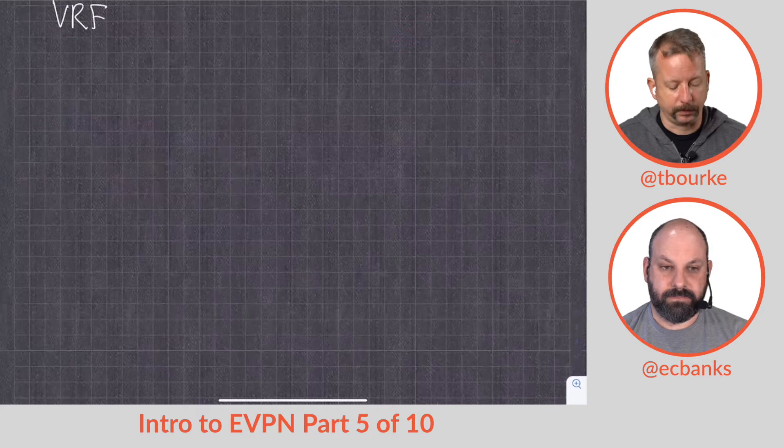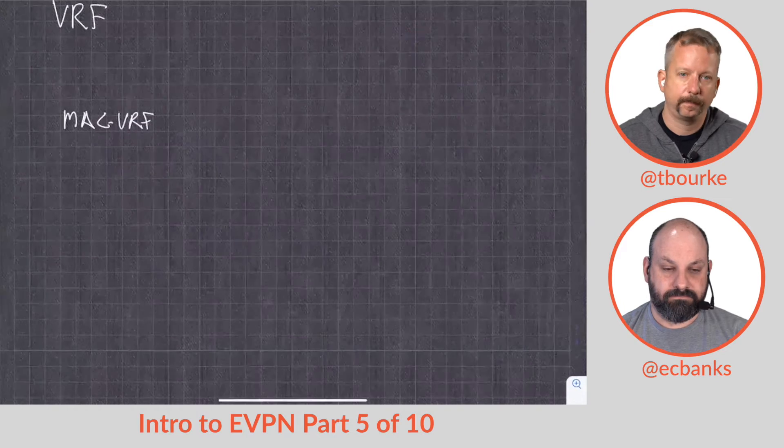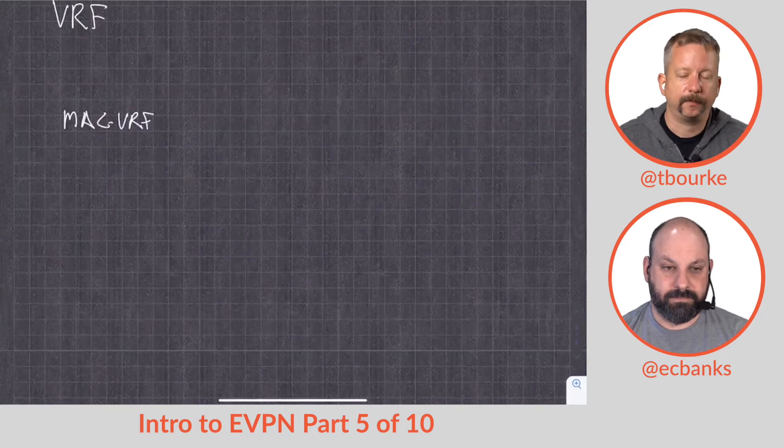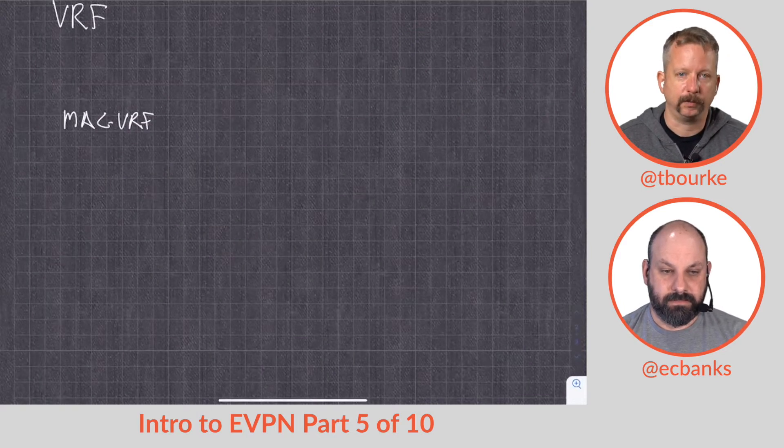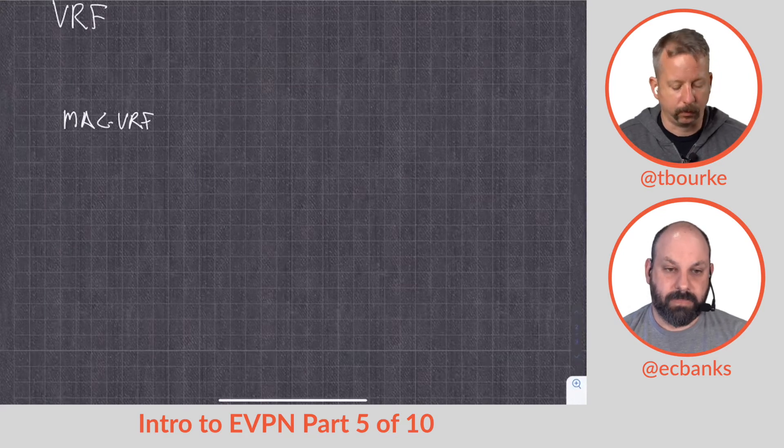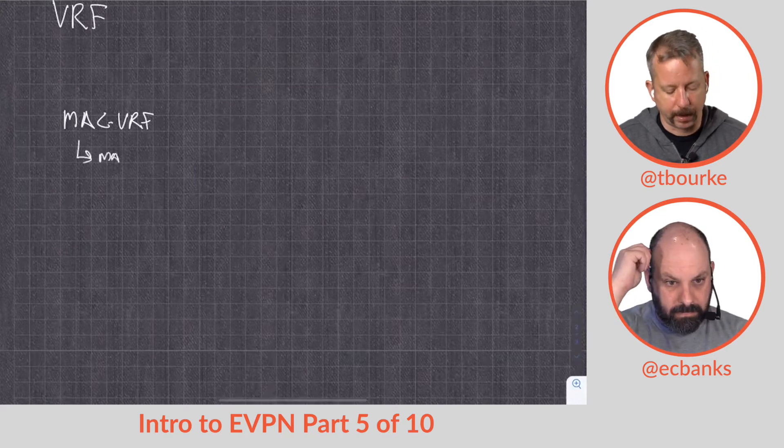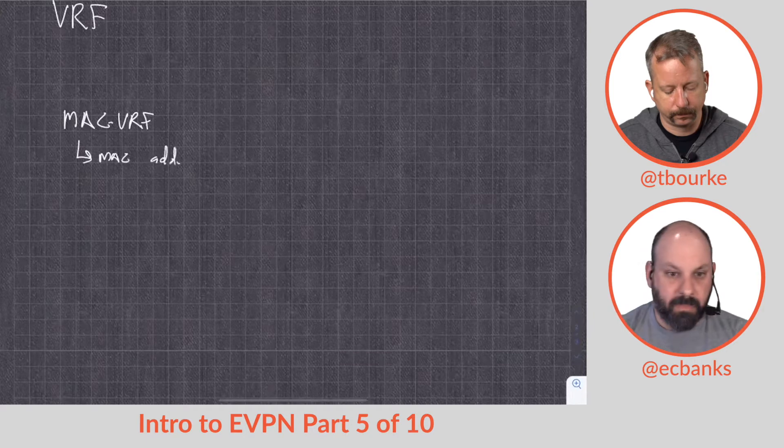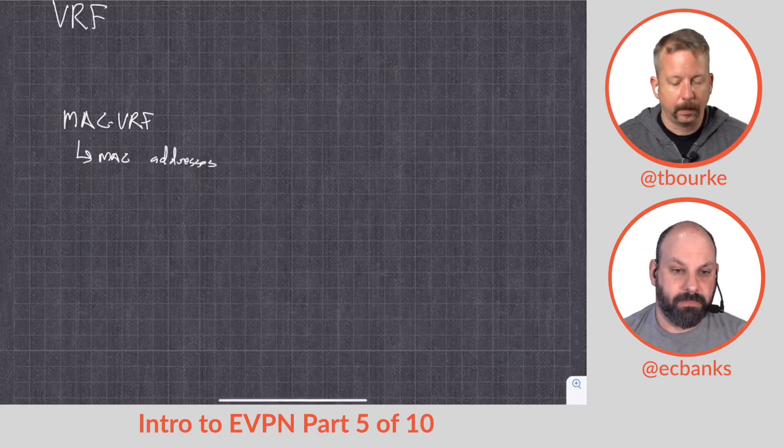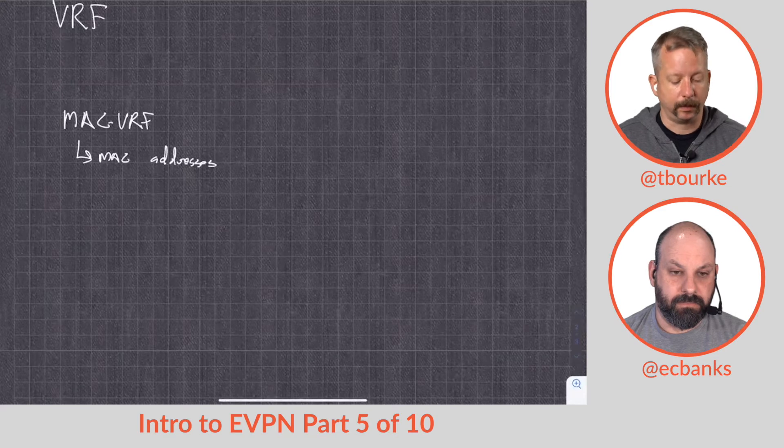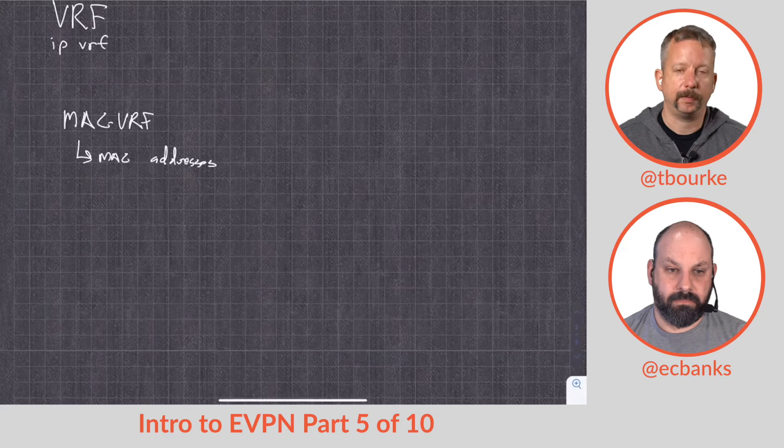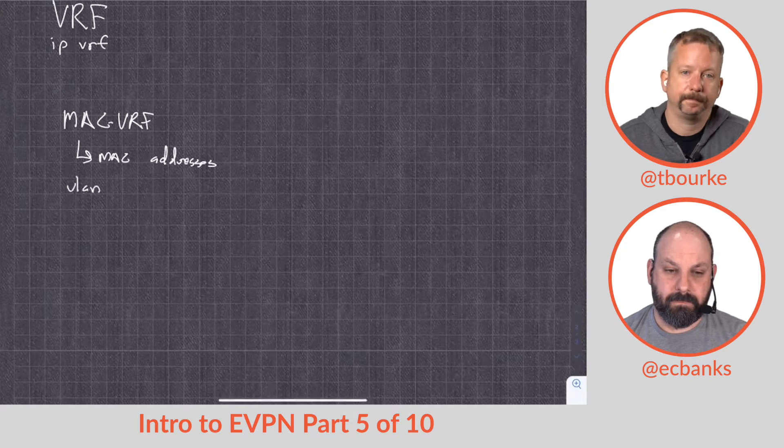The next one is called a MAC VRF. This is going to be a discrete forwarding space that we're going to use to forward layer 2 addresses. So what goes in here? MAC addresses. This is done as a VLAN.